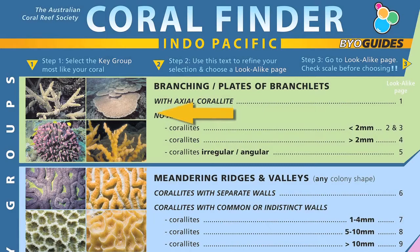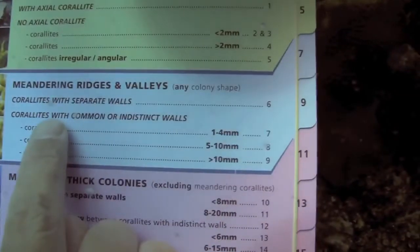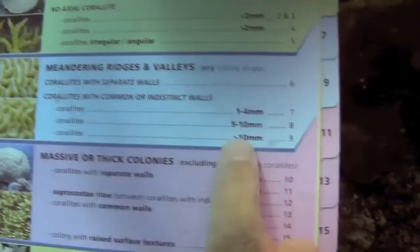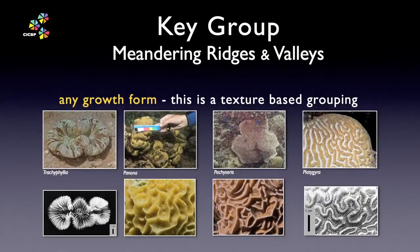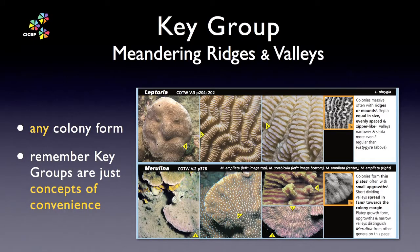By comparison, the branching key group worked with the growth form of the colony. It doesn't matter that they are different approaches. The Coral Finder's design strives to use practical features that you can see in the field, so the meandering texture can apply to any growth form. Note that the Coral Finder stresses this in the text. Think of key groups as concepts of convenience that we use to help make coral identification easier to learn.